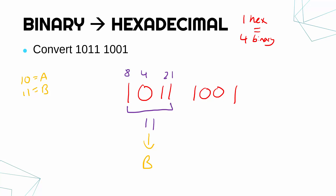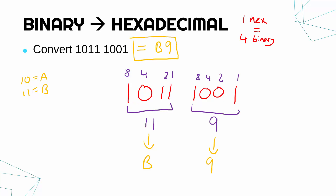Now I do the same thing with my second group of four: 1001. Eight plus one is nine, and nine in hexadecimal is just nine — the letters only come in after 10. So this long binary number is actually really simply just B9 in hexadecimal. All you do is convert each group of four. It only being four means the numbers are always going to be quite small, so it's really, really easy.